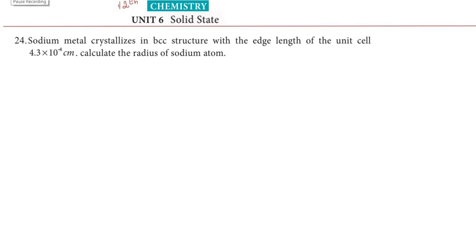Hi students, greetings from Strucces Education Academy. 12th chemistry, unit 6, solid state. We will look at problem 24 in the back evaluation. The problem: Sodium metal crystallizes in a BCC structure with an edge length of a unit cell of 4.3×10⁻⁸ centimeters. Calculate the radius of a sodium atom.